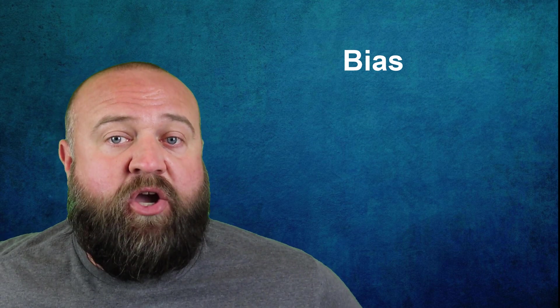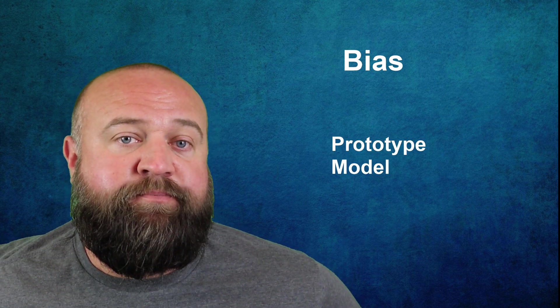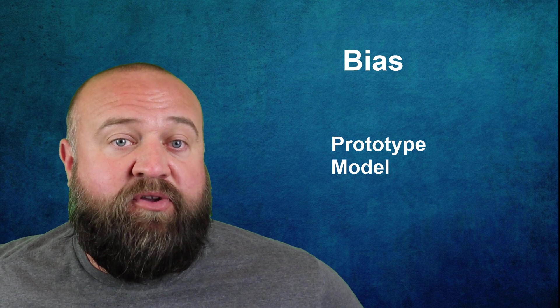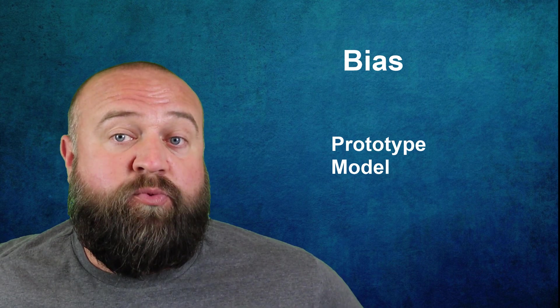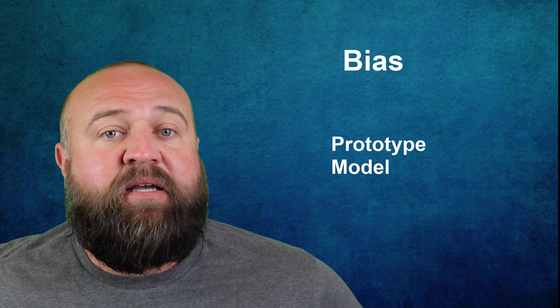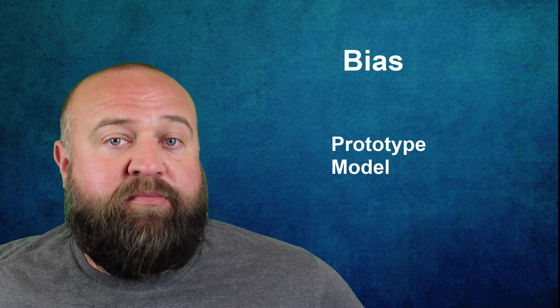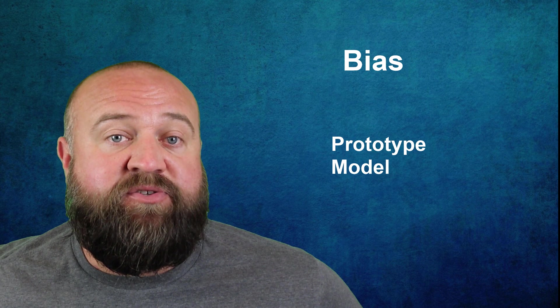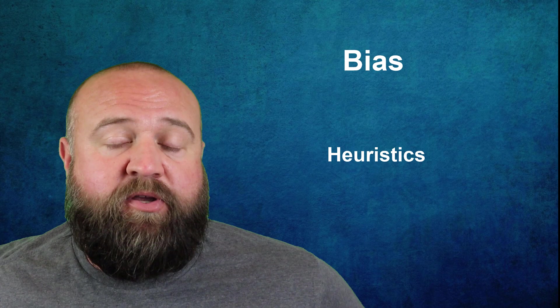While there are dozens of different types of bias that have been identified, in this video I'm going to talk about eight of the most common types. It's worth noting that bias in all of its different manifestations largely comes from the experiences and information that we're exposed to — it's an example of how the prototype model can influence our thinking. I encourage you to watch the video on the prototype model before finishing this one, and also my video on problem-solving strategies, specifically the section on heuristics, because all biases stem from heuristics.